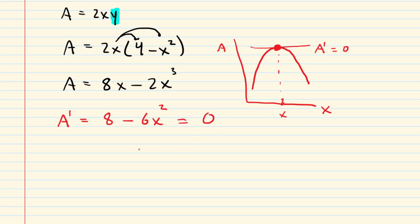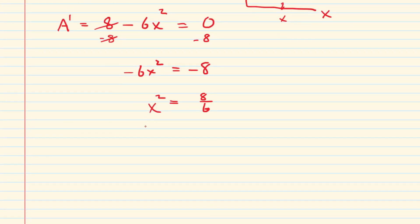We're going to solve this for x. We could subtract 8 from both sides of this equation. This gives us negative 6x squared equals negative 8. Divide both sides by negative 6. Since you're dividing a negative by a negative, you'll get positive 8 over 6 there. And then why don't we actually reduce that fraction first? Divide top and bottom by 2. We have 4 over 3.